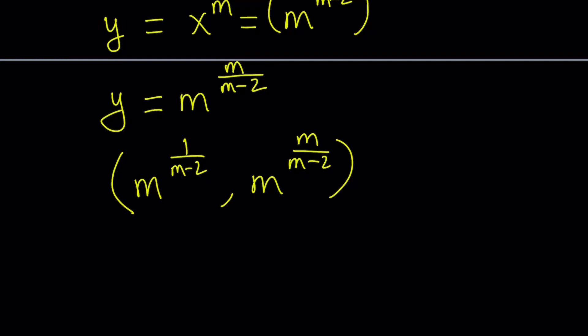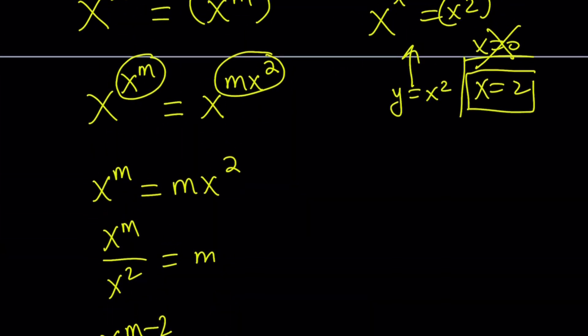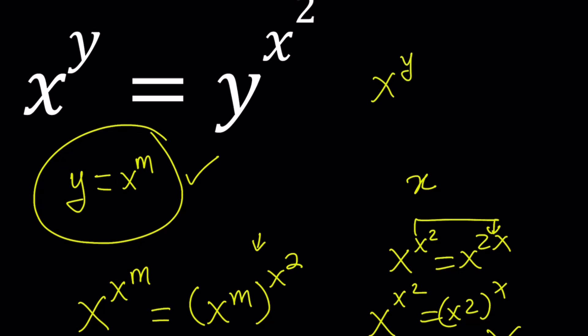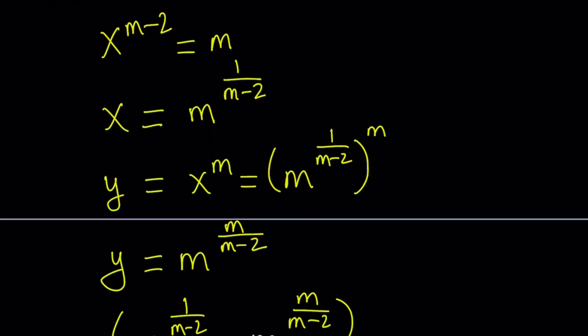So we've found the solutions using a parameter m, which can be anything besides 2. You can also generalize this scenario — for instance, what would happen if we were given x to the power y equals y to the power x cubed, x to the fourth, x to the fifth, or in general x to the n? You could still solve it — or could you? I'll let you figure that out.